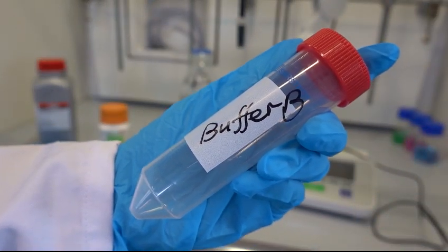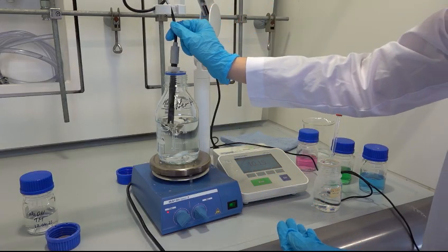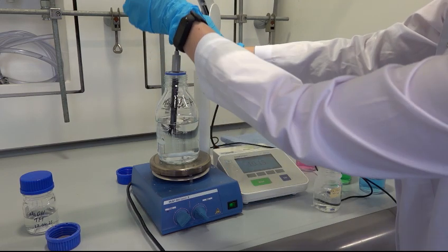In the next step, the pH of buffer A should be adjusted. Before we begin, turn on and calibrate the pH meter.